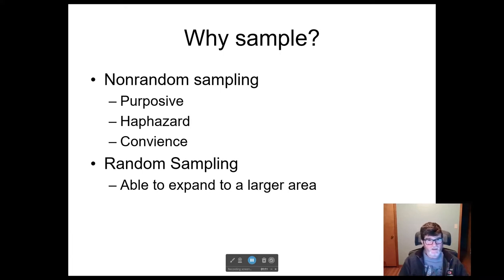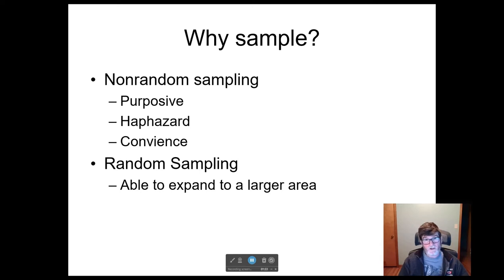It's too expensive to collect a complete census, so people use various approaches. You could do non-random sampling: purposeful sampling, where you deliberately choose certain types of elements; haphazard sampling, which is very common and often mistaken for random sampling; or convenience sampling — things like the breeding bird survey that samples from roadsides, not because it's ideal but because it's convenient.